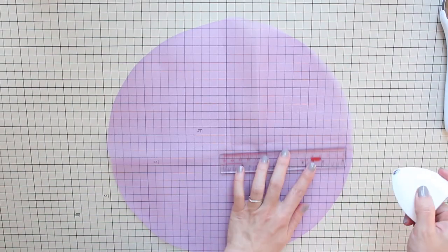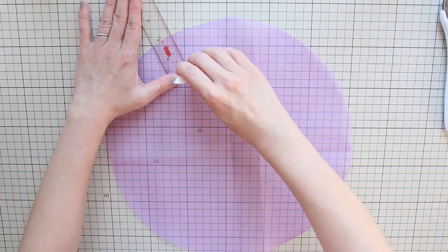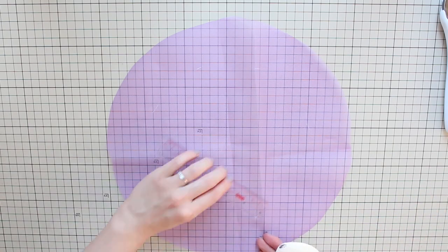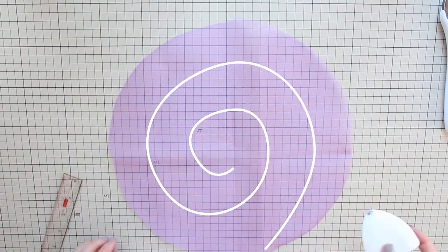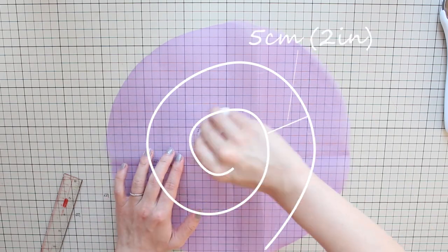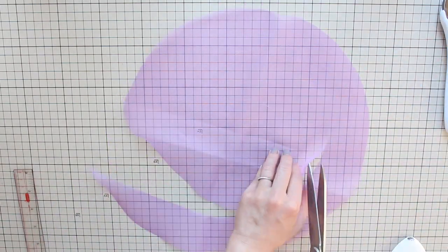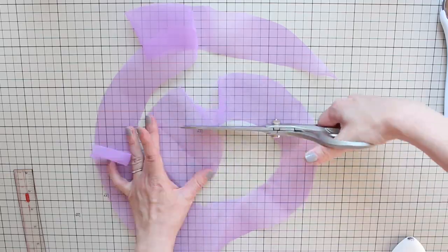I made another one in purple and this one is also a 30 centimeter or 12 inch wide circle but the distance between the swirl lines is narrower about five centimeters or two inches. When you make the distance narrower you get a longer strip.